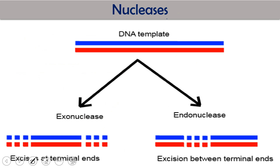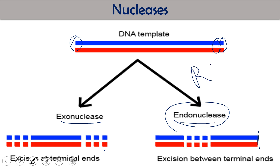DNA nucleases are of two types: exonuclease and endonuclease. If an enzyme walks from the terminus — either the 3-prime or 5-prime terminus — removing one nucleotide at each step, that is called an exonuclease: the enzyme attacks DNA from the terminal end. The second type is endonuclease, where excision occurs between the termini — not from the terminal but in the center — so the DNA will be fragmented into pieces.